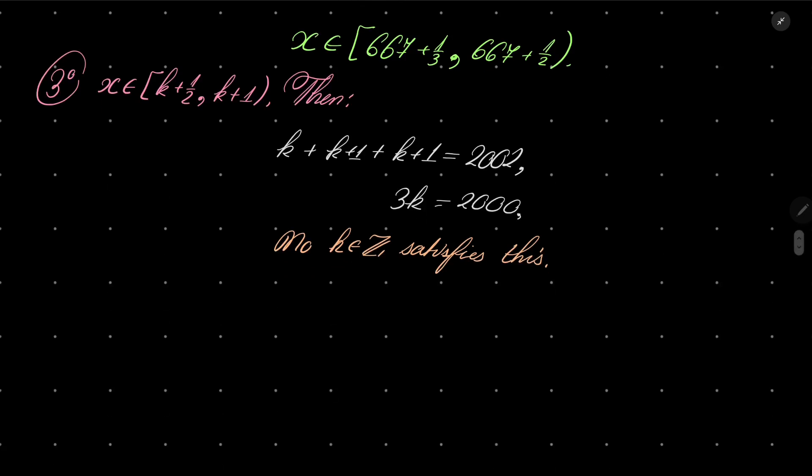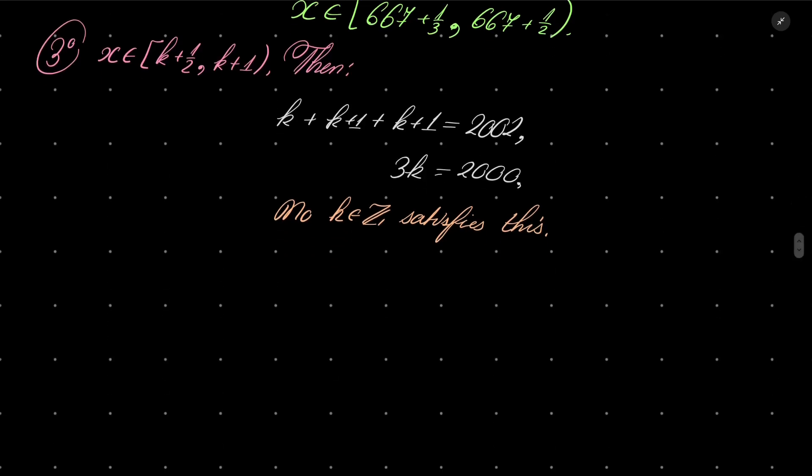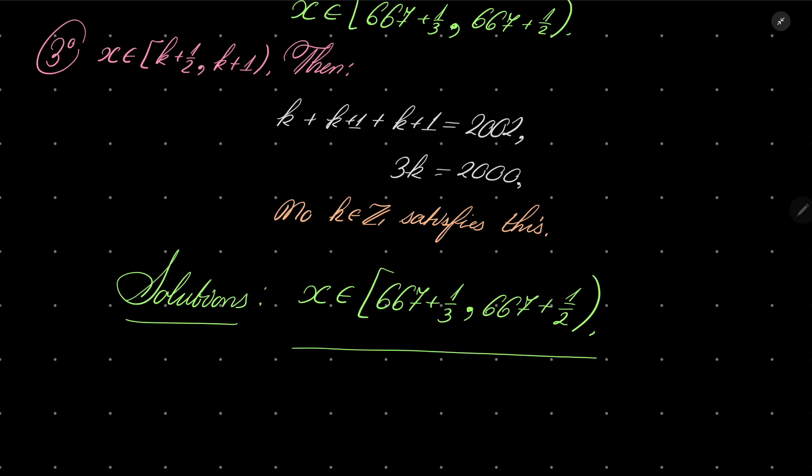So all in all, we have our solutions. x is in the interval 667 plus 1/3 to 667 plus 1/2, closed on the left and open on the right-hand side. And that is our solution set.